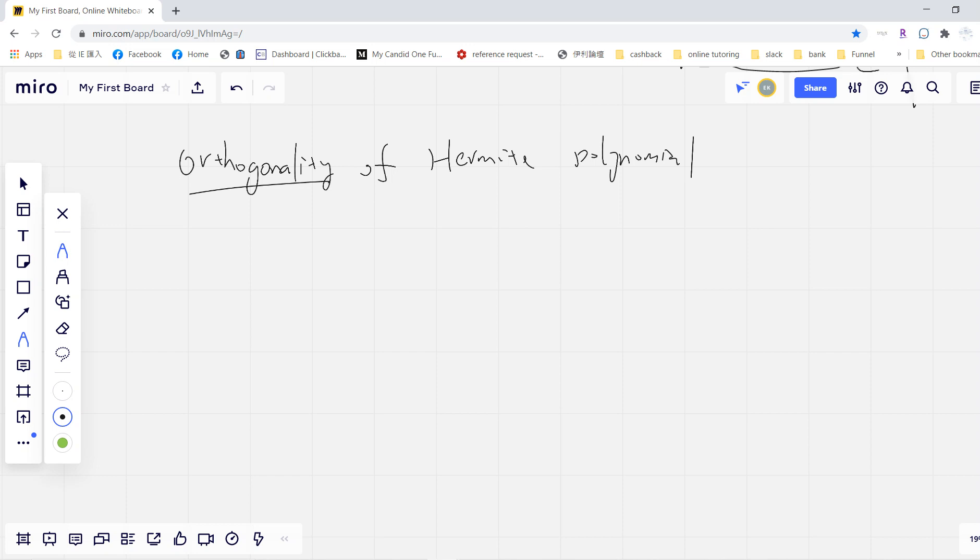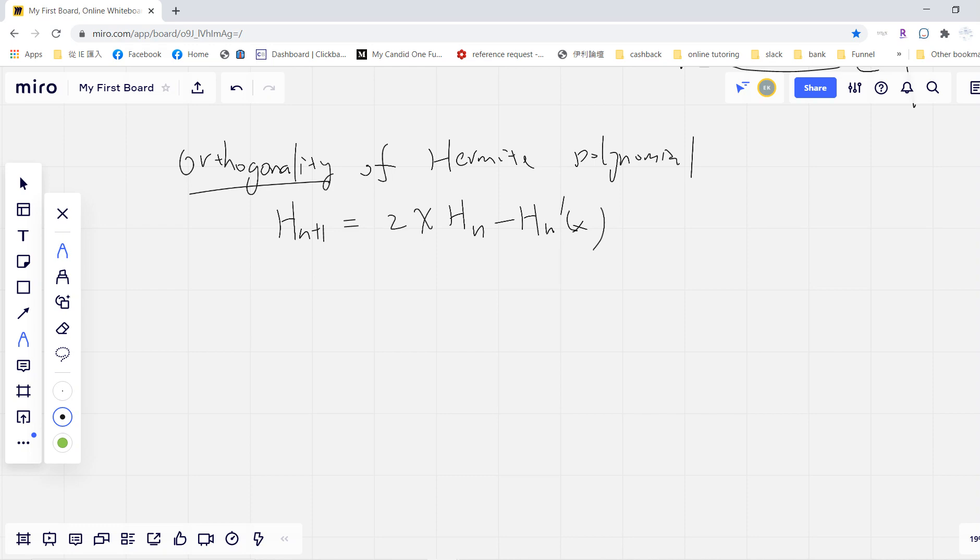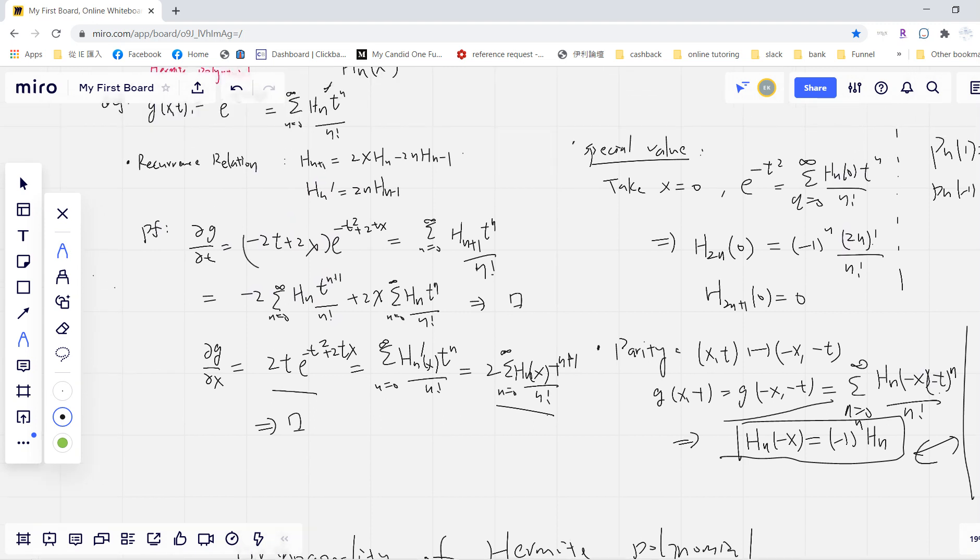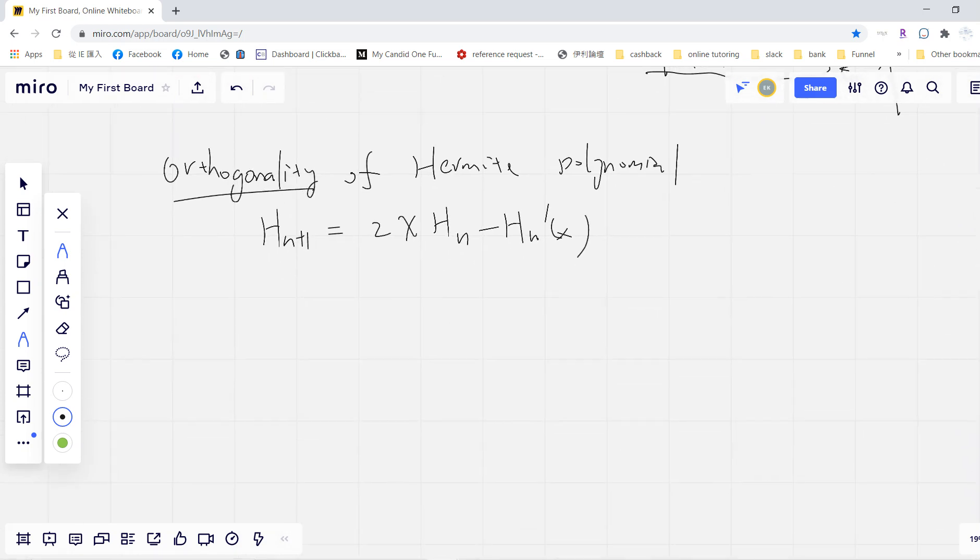Okay, so remember that we have the recursion formula like this. So this is H_n, right? But we can use the previous two. We can use the previous one. So we can just replace H_{n-2} and H_{n-1} to be H_n. So we have this.